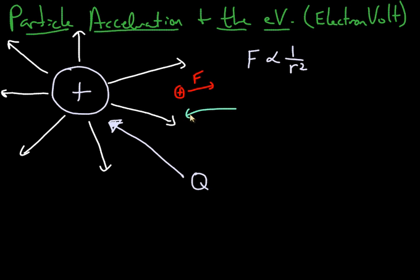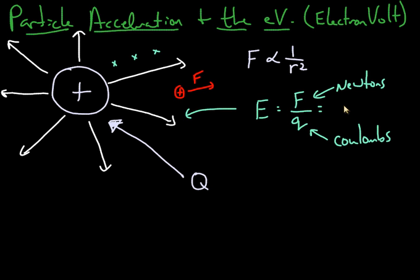We measure the strength of the field at a given point either here or here or wherever we measure it. E equals F over Q. And therefore our units are Newton per Coulomb.